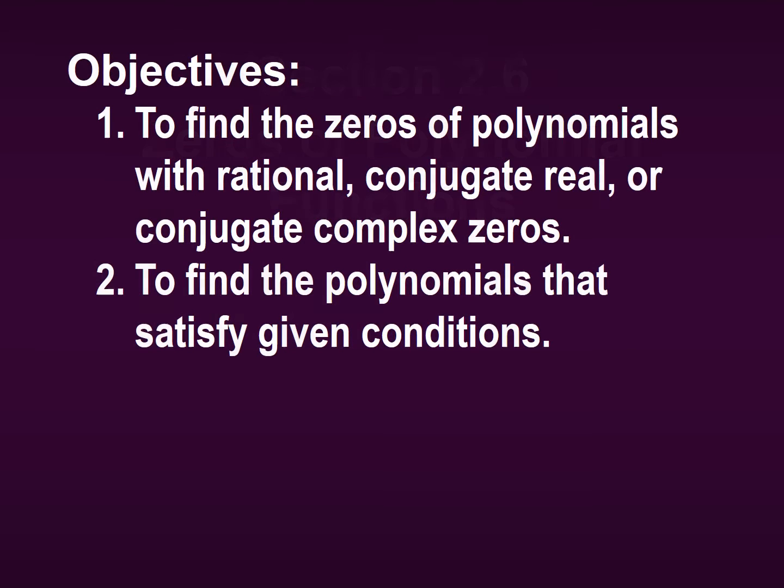Today we're going to cover section 2.6 in our BJU Press pre-calculus textbook. We're going to be discussing zeros of polynomial functions. Our objectives are to remember how to find the zeros of polynomials with rational, conjugate real, or conjugate complex zeros, and then we're also going to create polynomials that satisfy given conditions.